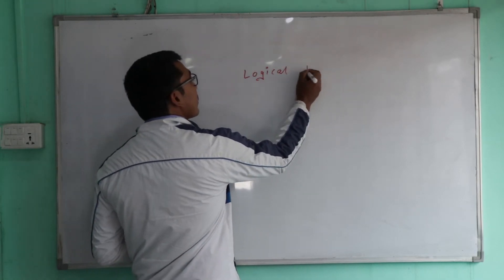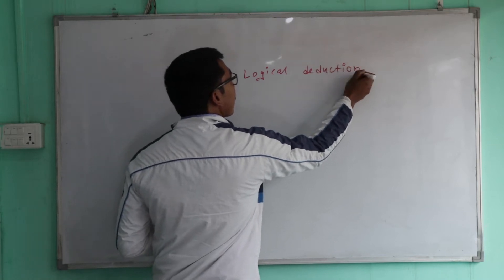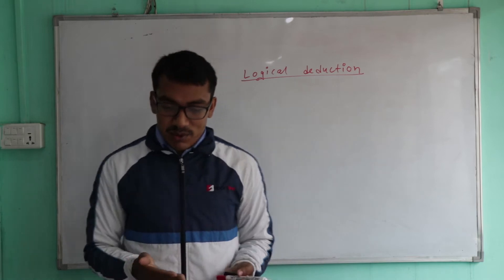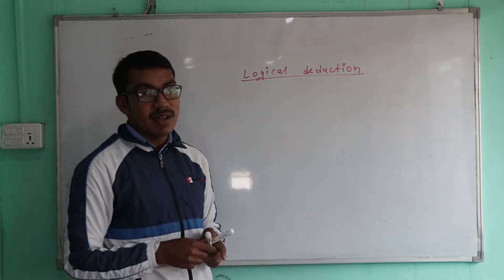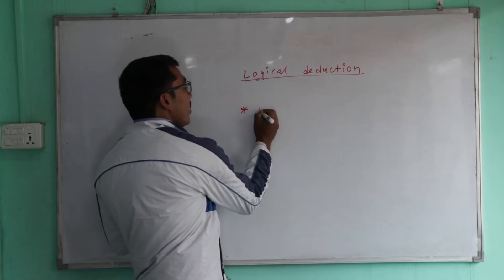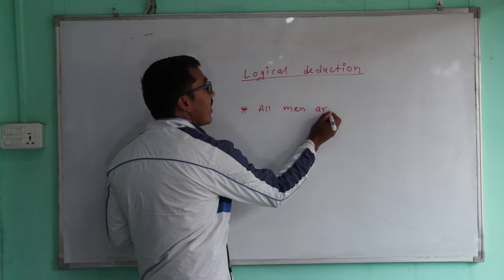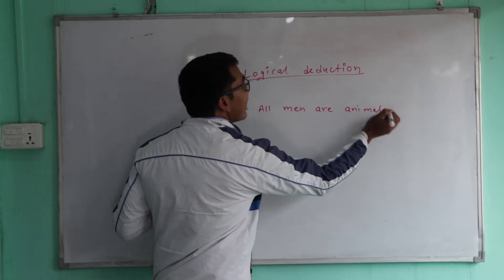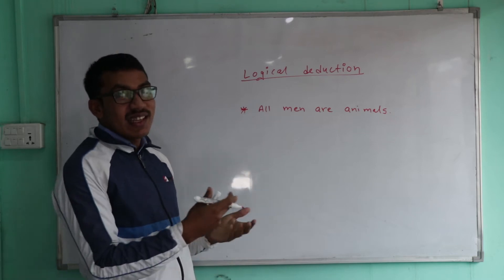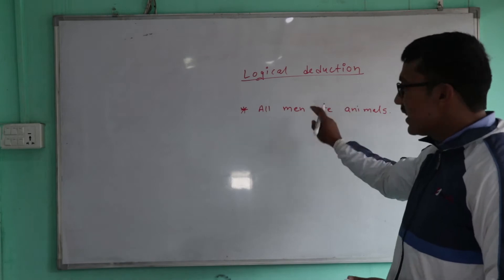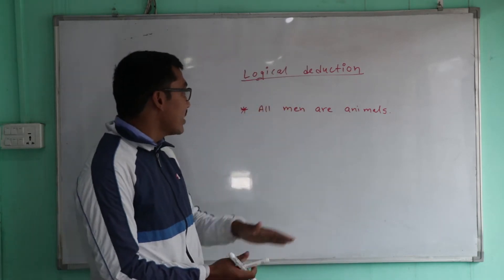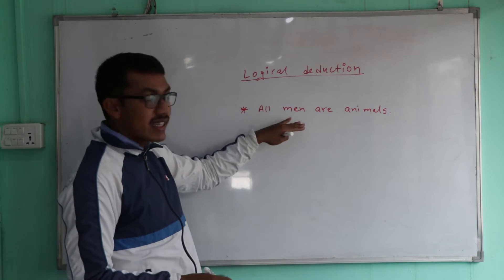This is a simple example of logical deduction — a logical way to answer or reduce a question. If you have two or three statements, let's take a simple statement: All men are animals.